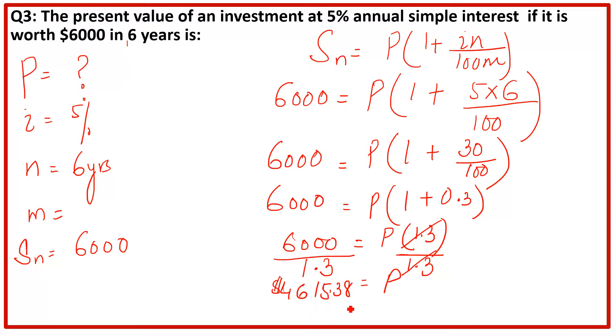4615.38, this is the principal amount. It means you are going to invest this amount today. You have this amount. After 6 years at the annual interest rate of 5%, it will be 6000. So this is the answer.